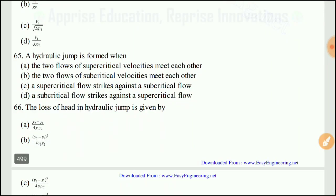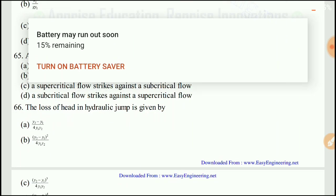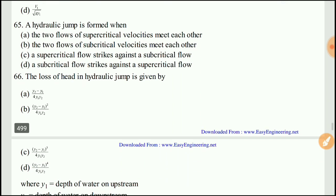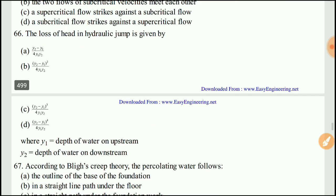Question 65: A hydraulic jump is formed when — the right answer would be C: supercritical flow transitions into subcritical flow.